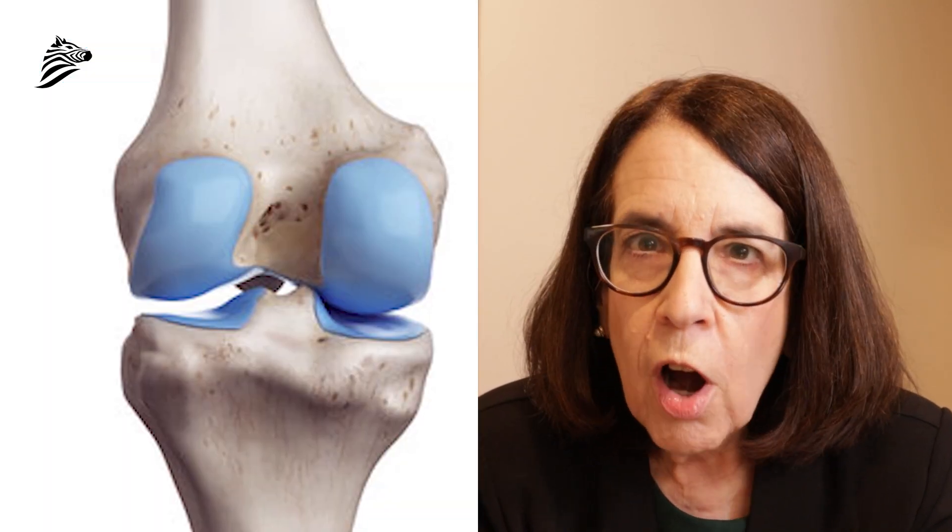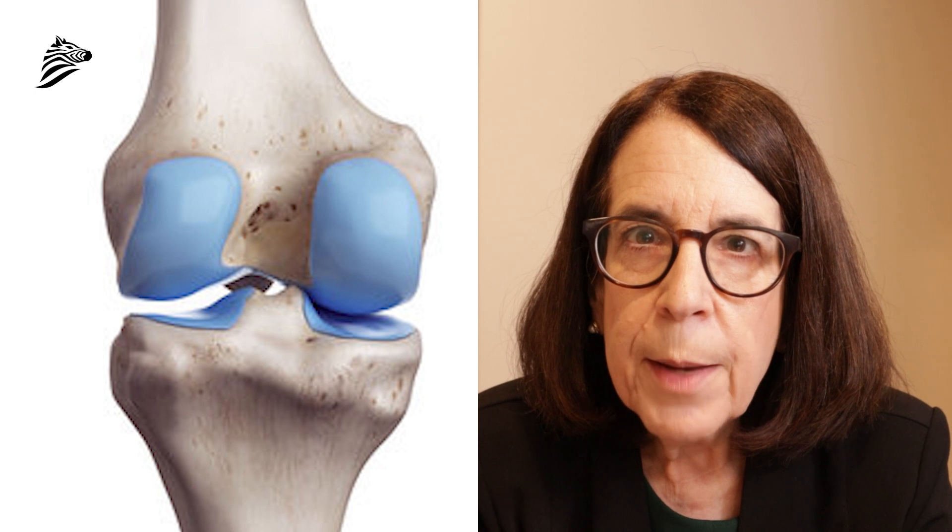The extracellular matrix is made up of fibers of collagen, elastic fibers, and molecules called proteoglycans. The connective tissue includes things like tendons, ligaments, the dura that protects the central nervous system, the brain and the spinal cord, bone and cartilage, and the fascia, which is the material that literally connects the whole body — one part to the other.